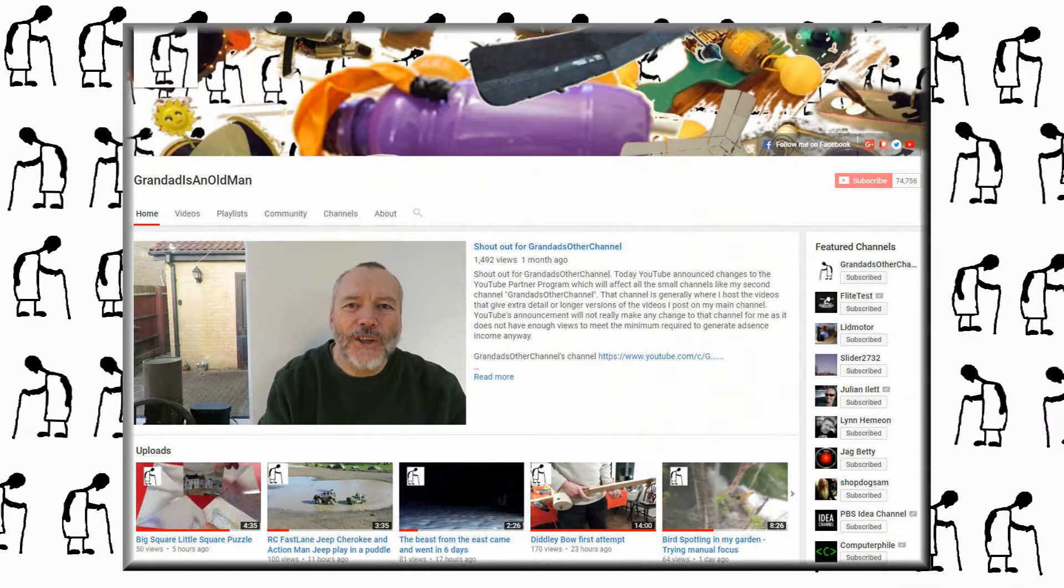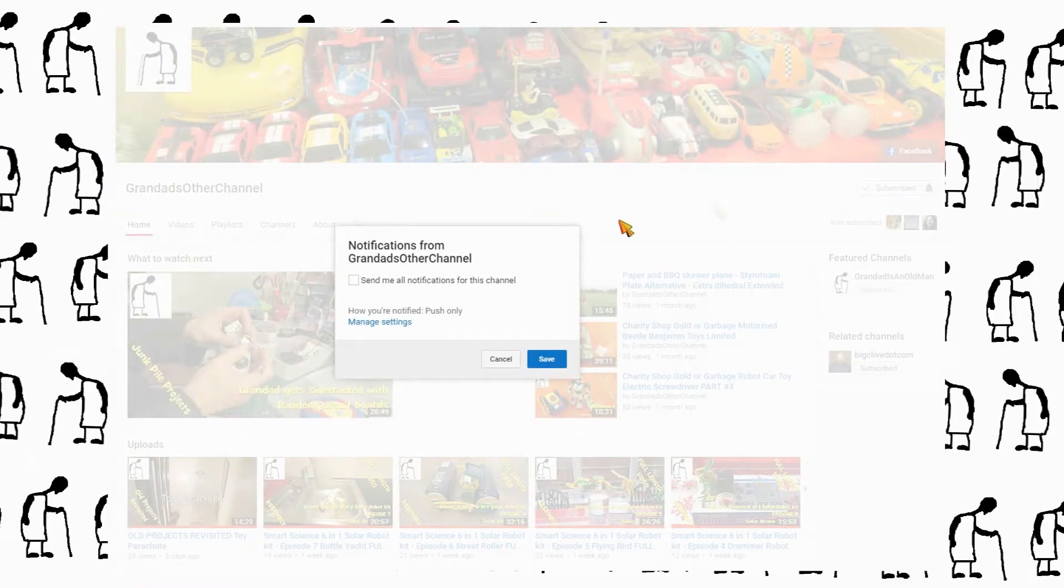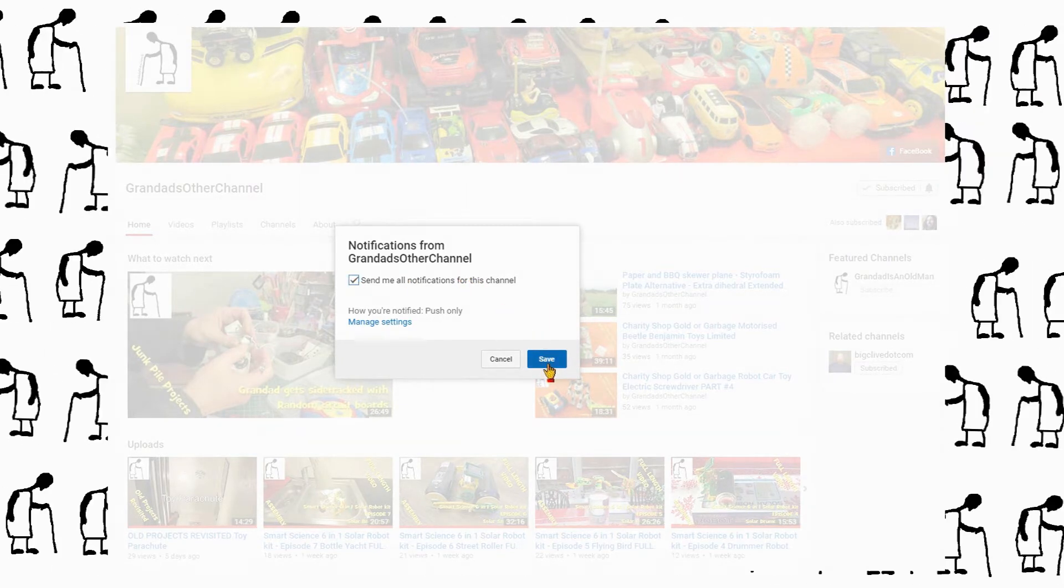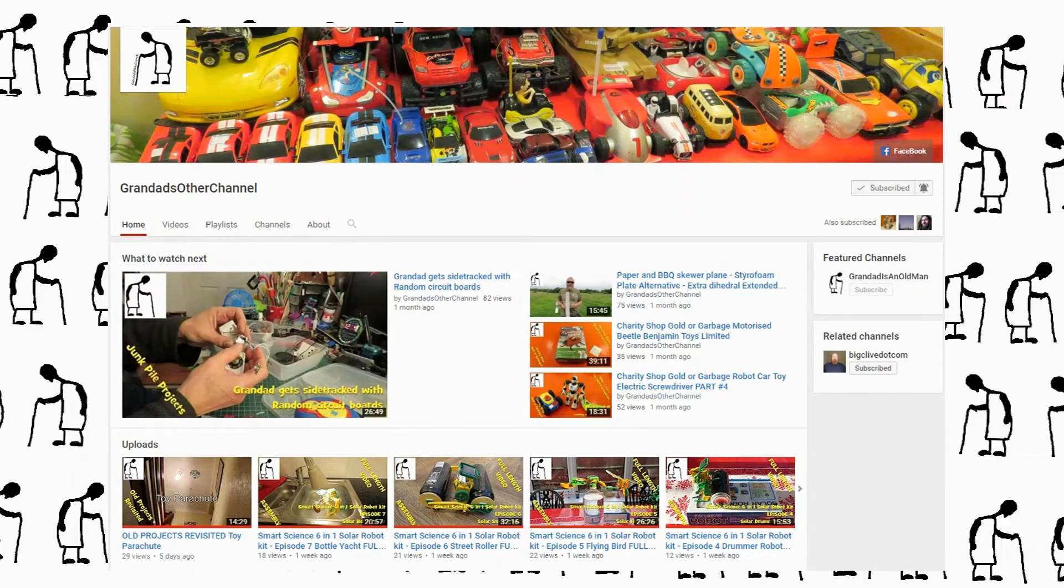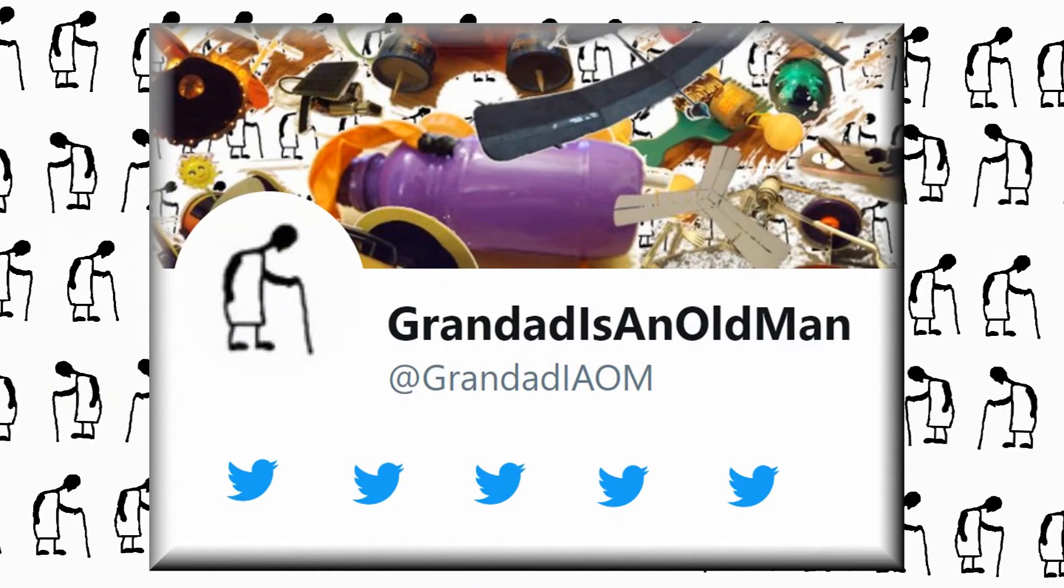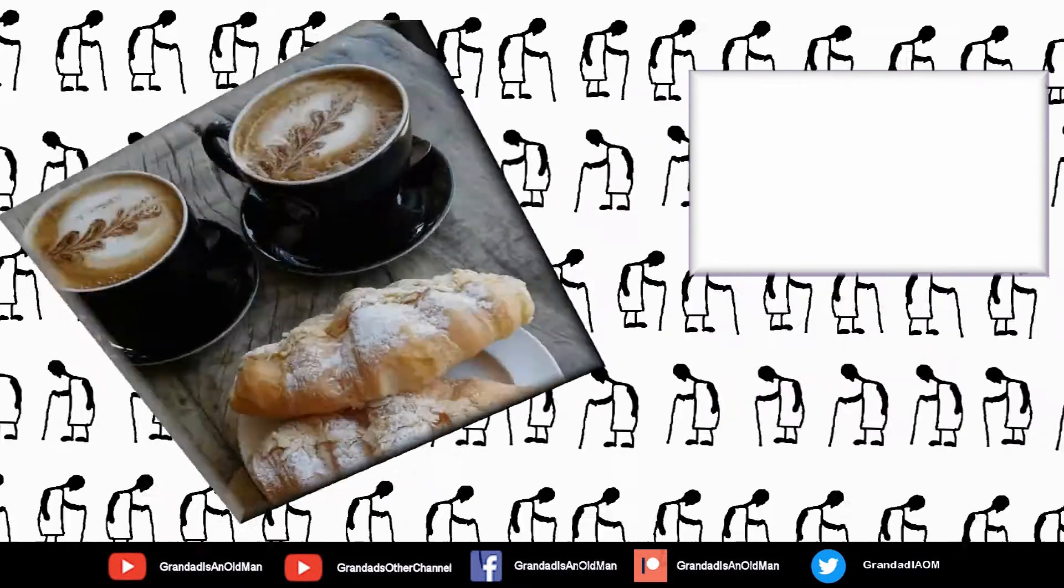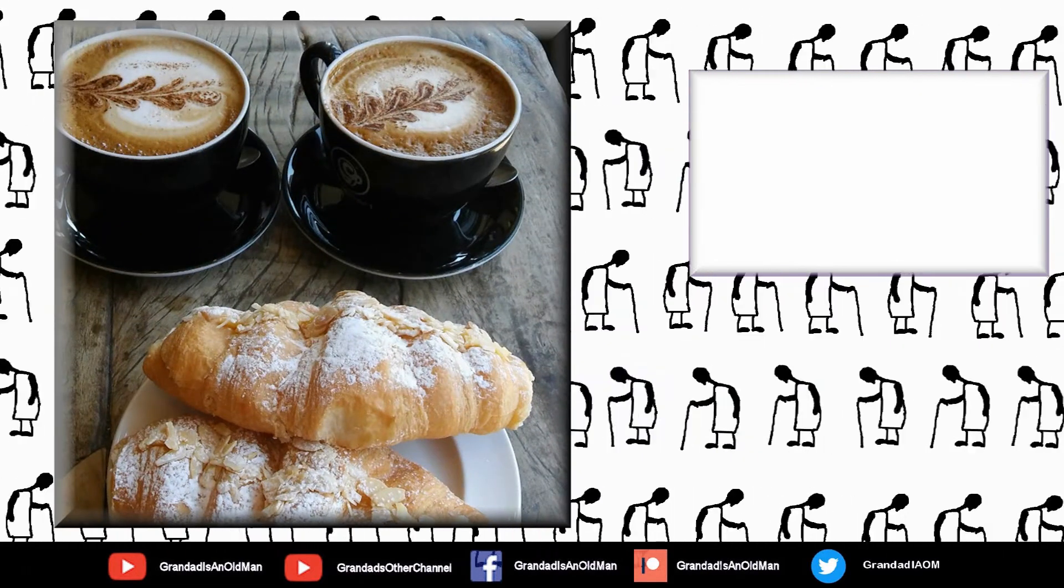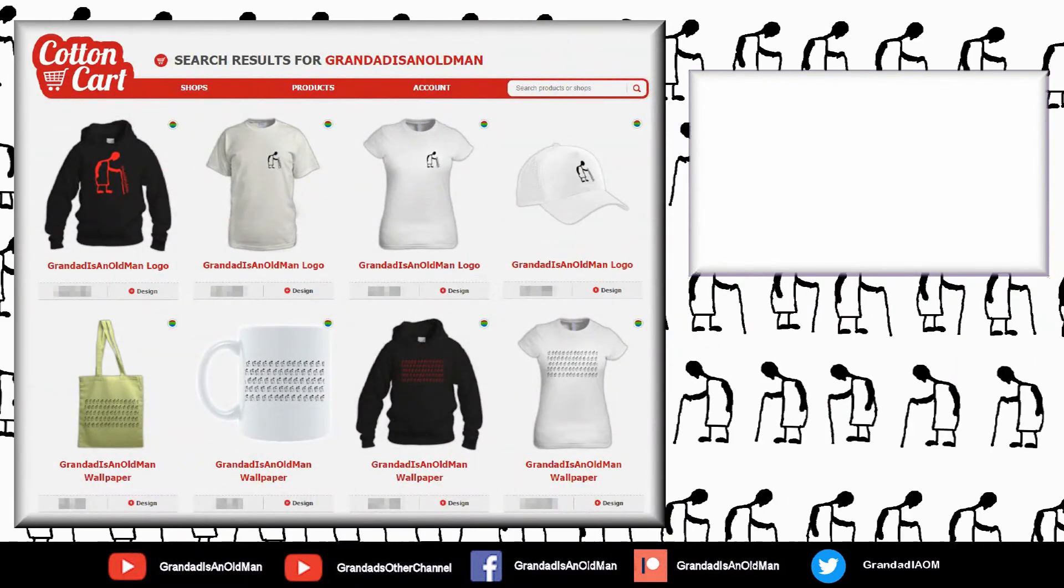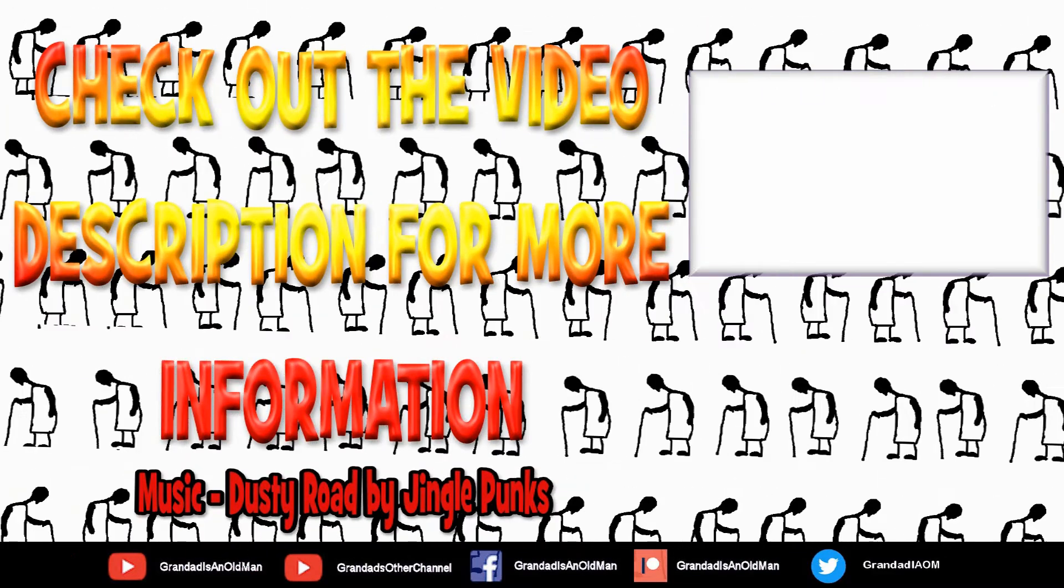There's plenty of videos on my main channel with more added daily, so don't forget to subscribe and enable notifications. My second channel, Grandad's Other Channel, is where I put the longer videos with more detail. Then there's my Facebook page and you can follow me on Twitter. You can help keep my channel running by donating a dollar on Patreon to buy me coffee. If you fancy some Grandad merchandise, I have two shops, one on Redbubble and the other on Cotton Cart. Finally, you can always find more information in the video description. Thanks again for watching.